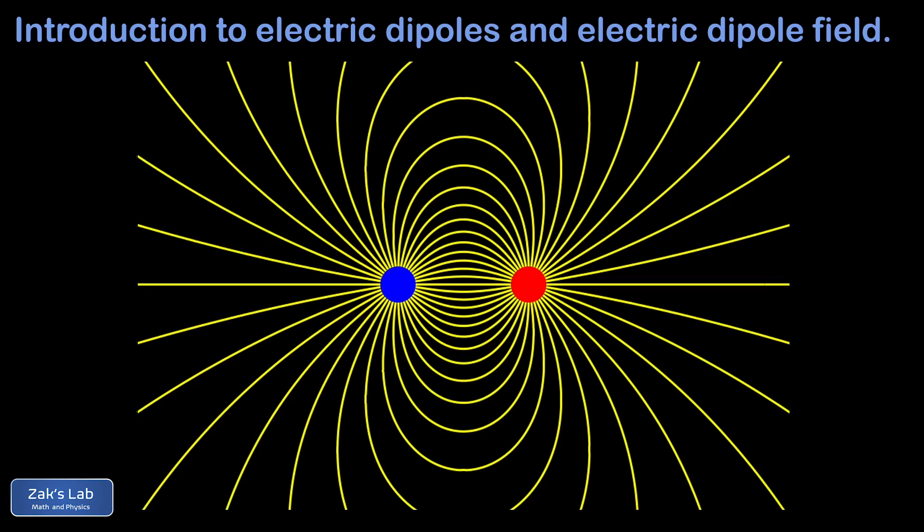The next thing we want to do is get a qualitative sense for the electric field surrounding the dipole. What we're looking at here are the electric field lines, which tell us the direction of the electric field vector at each point in space. The direction is always tangent to the electric field lines, and the relative density of the field lines tells us the relative field strength at each location. If we choose a couple of points and look at the electric field vector contributions from each charge, we can get a good sense for why these lines curve the way they do.